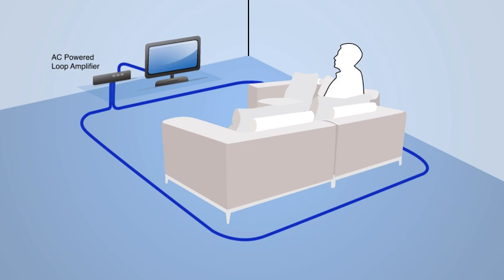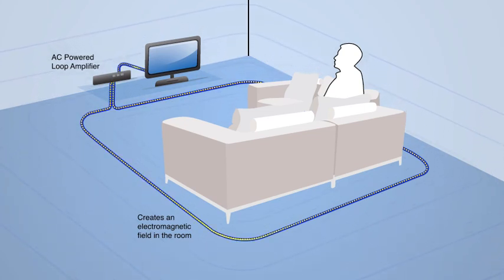The media signal is sent from the television or stereo system to the amplifier which then sends the signal through the loop surrounding the room or seating area. As the signal travels through the wire it creates an electromagnetic field that fills the room.